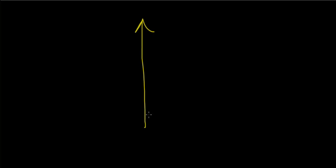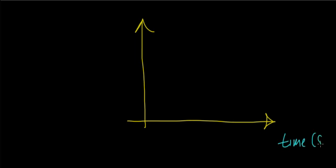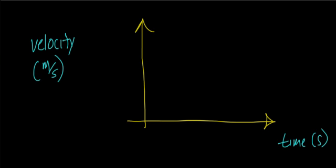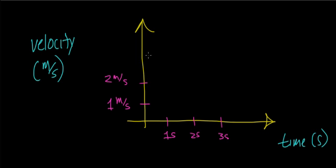Now let's look at what constant acceleration means on a velocity versus time graph. The horizontal axis is again time in seconds — one second, two seconds, three seconds. The vertical axis is velocity, in units of meters per second — so one meter per second, two meters per second, three meters per second, and so on.